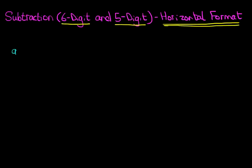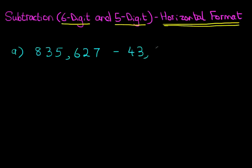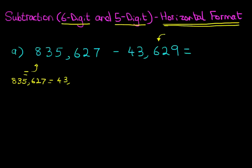Let's have a look at our first example. We have 835,627 minus 43,629. As we've said in previous tutorials, what we're going to do is add a number to the number we're subtracting so that the sum equals this — because we can rewrite this question to say 835,627 equals 43,629 plus something. So we're going to add the number to the smaller number we are subtracting.